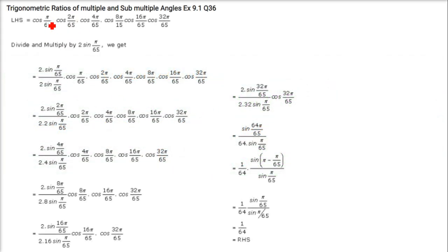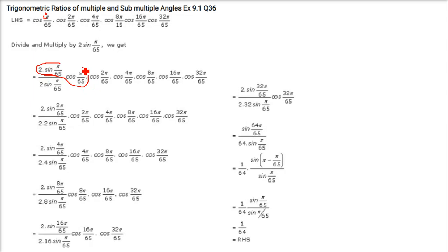Here we have powers of 2: 2 to the power 0, 1, 2, 3, 4, 5, and so on. Either you can use the direct formula, or we can do it step by step. For example, multiply 2 sin(π/65) in the numerator and denominator. Using 2 sinθ cosθ = sin2θ, this becomes sin(2π/65).